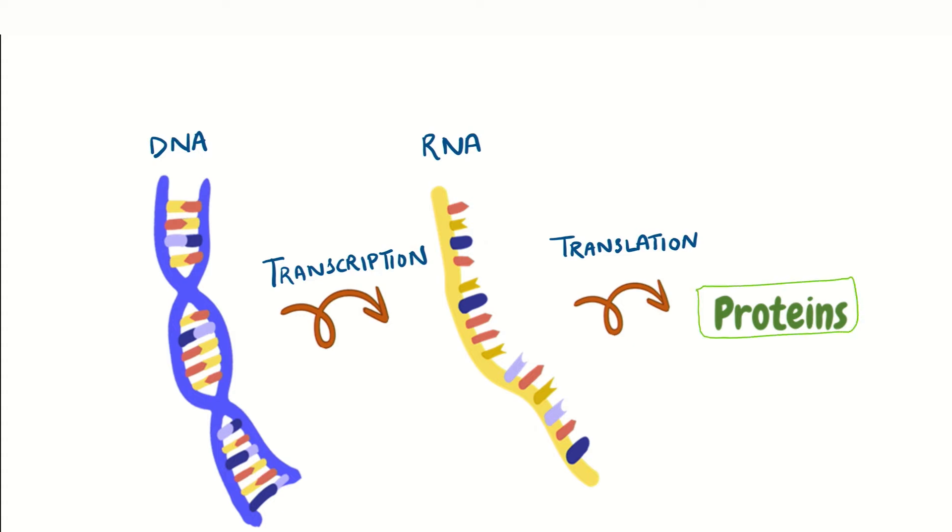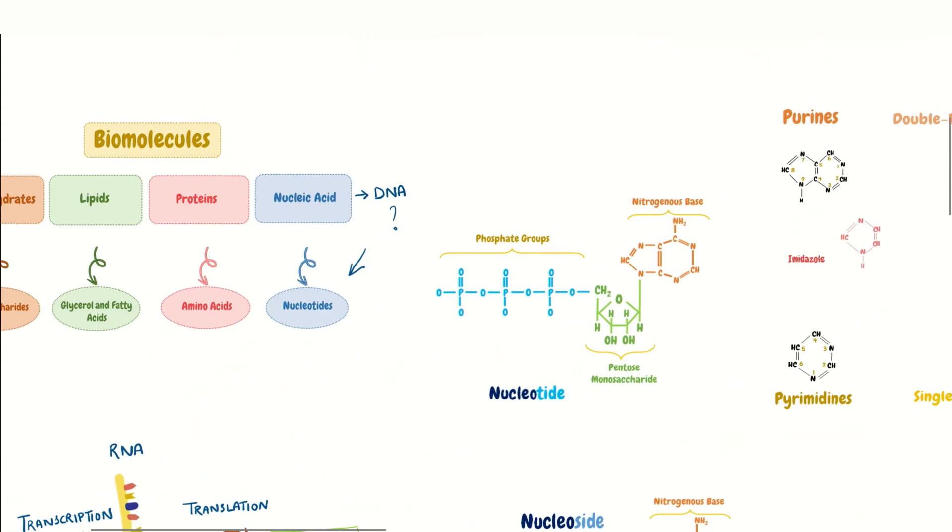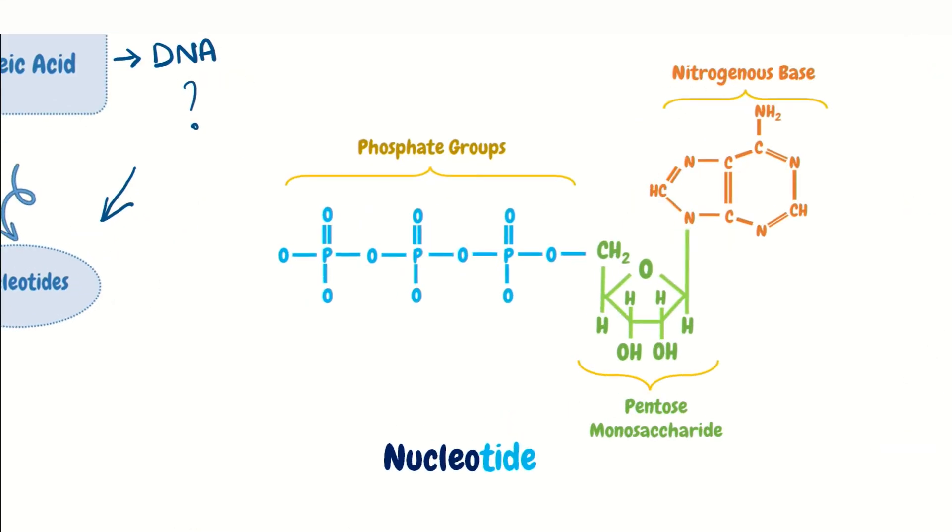So now, nucleotides are composed of three main components: a nitrogenous base, as you can see here, a pentose sugar, and two to three phosphate groups. So now, first we'll talk about nitrogenous base.